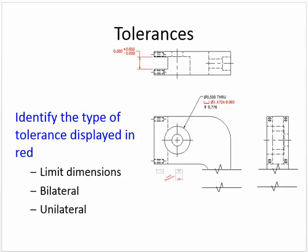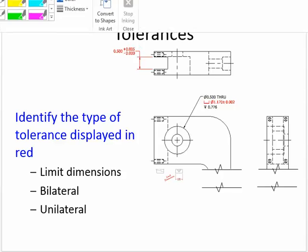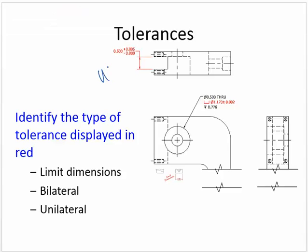Now we want to identify what type of tolerances are being given. Up here they're giving me two different values. The way I think of it: it gives me two, and since it's the opposite of what I'd expect, it has to be unilateral — each one goes one direction. Over here it's giving me one tolerance value, and again the opposite of what I'm thinking, so it should be bilateral.